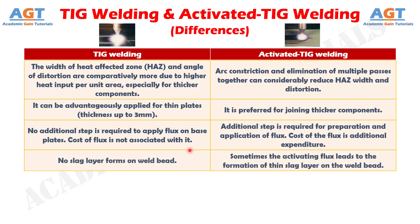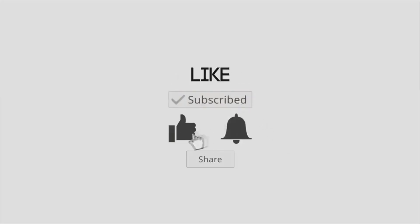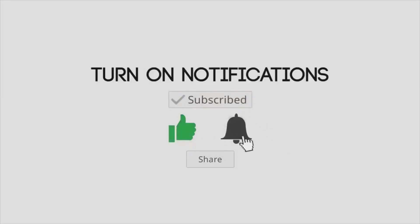Difference number 9: no slag layer forms on the weld bead in TIG welding, whereas in activated TIG welding, sometimes the activating flux leads to the formation of a thin slag layer on the weld bead.